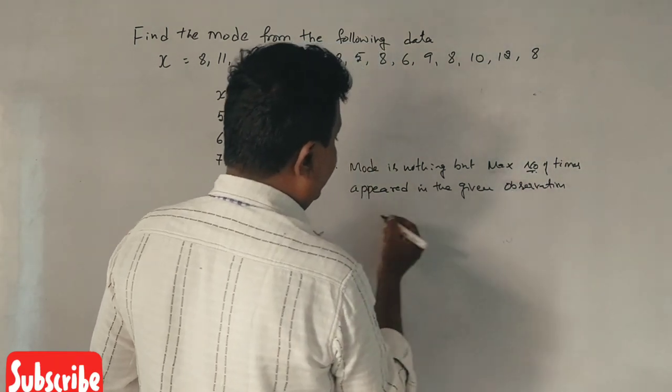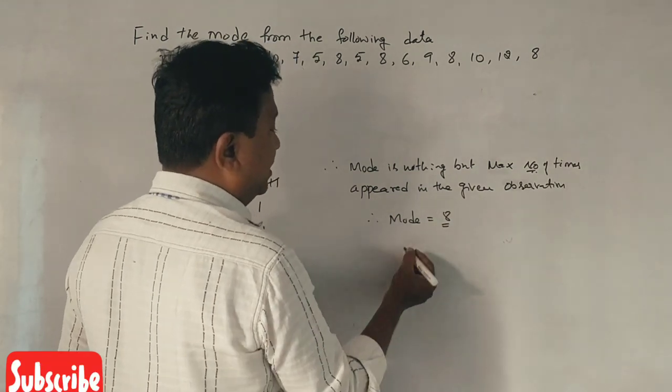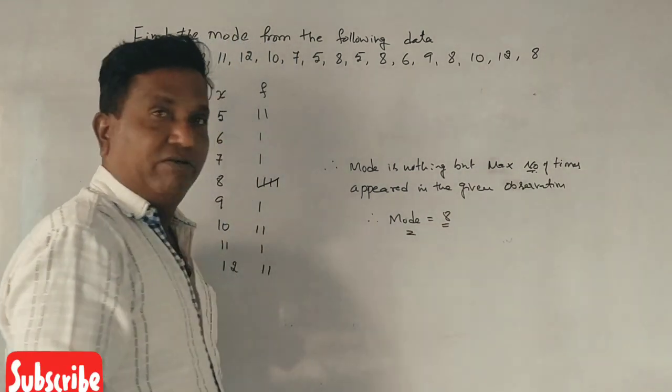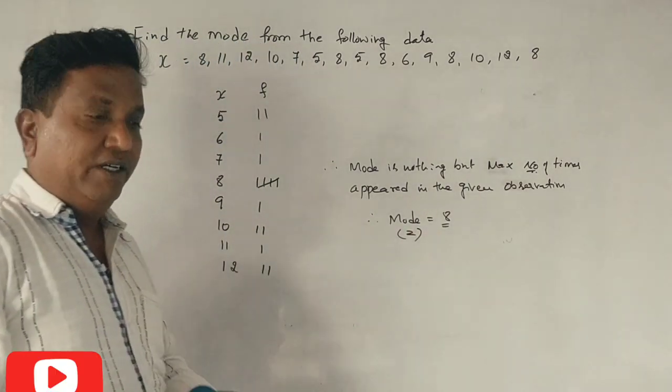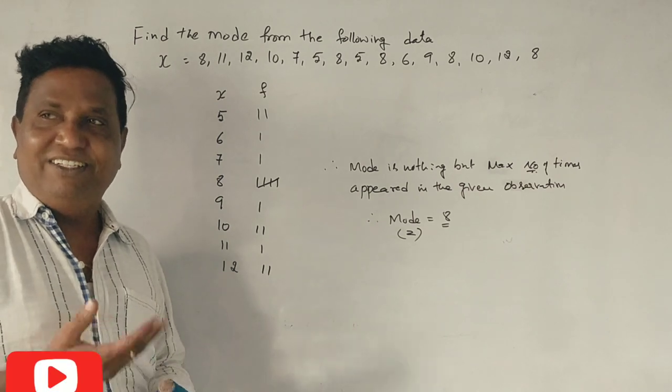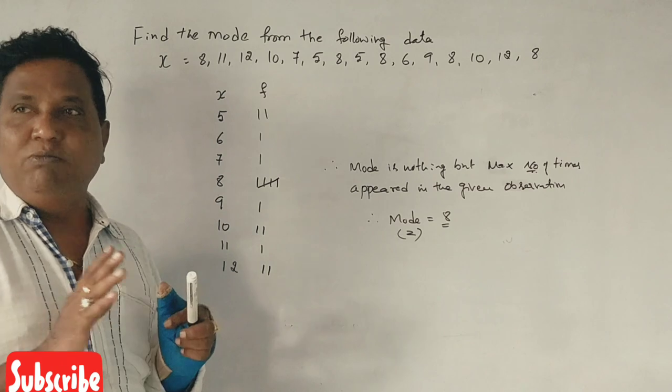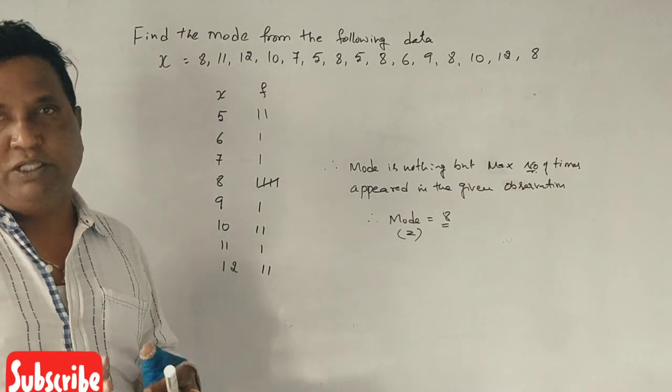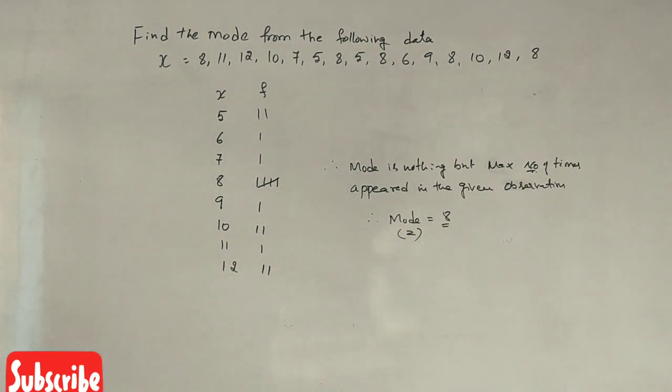Therefore, mode is equal to... Mode we denote as z. What name? Z, we denote it. It is easy. In an individual series, we calculate mode. That's it.